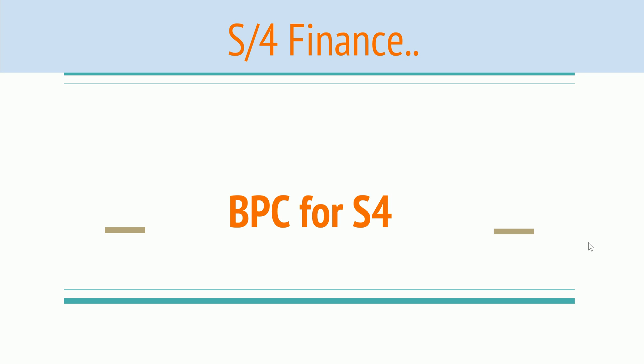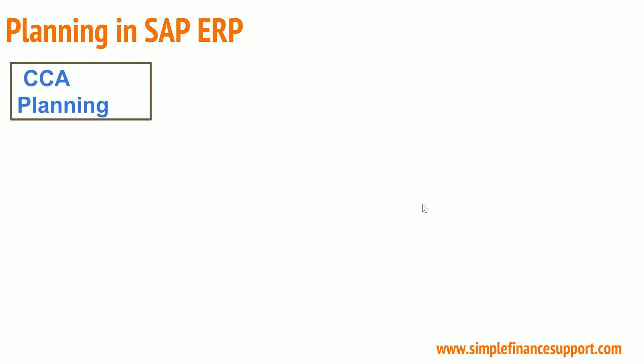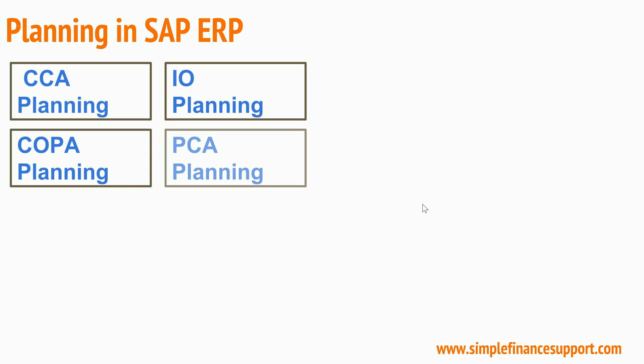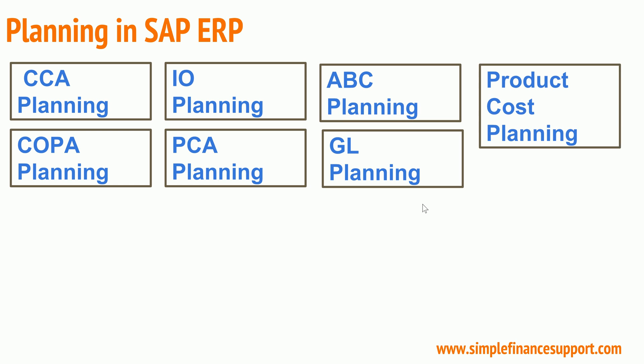Let us try to understand the concept of BPC in S4. Planning in ERP systems included cost center planning, internal order planning, COPA planning, PCA planning, general ledger planning, activity-based costing planning, and product cost planning. Different modules had planning tools within their respective modules, and you could copy actuals to plan and report actuals compared to plans.